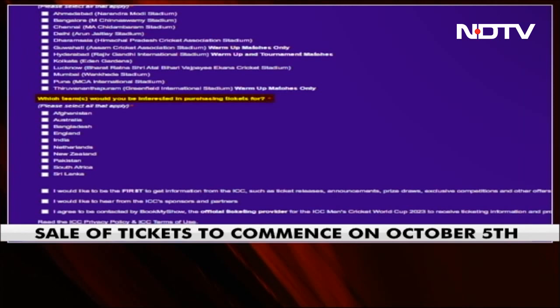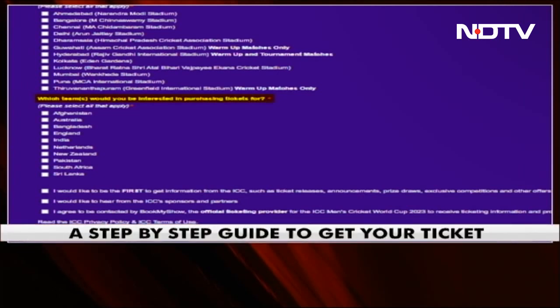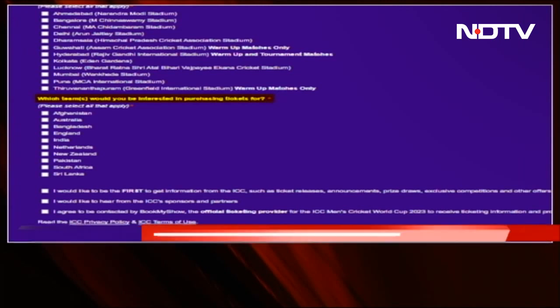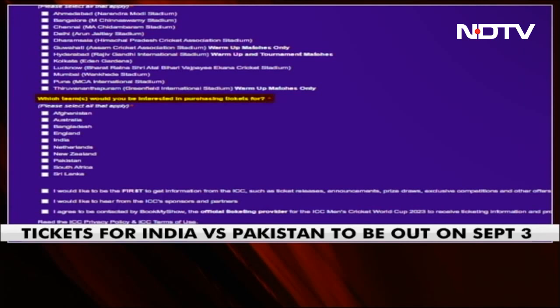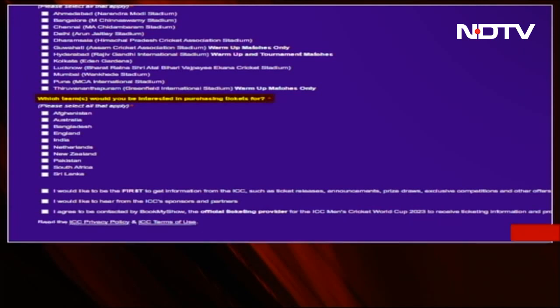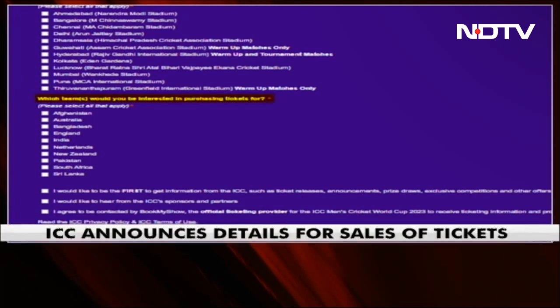Next up, you have the countries tab. Just like the above selections, select the options from here. If you want to watch India's matches, select the tab India. If you want to watch Australia's matches, select Australia, so on and so forth. Once you complete the registration, all you have to do is wait for ICC to inform you over email and messages.